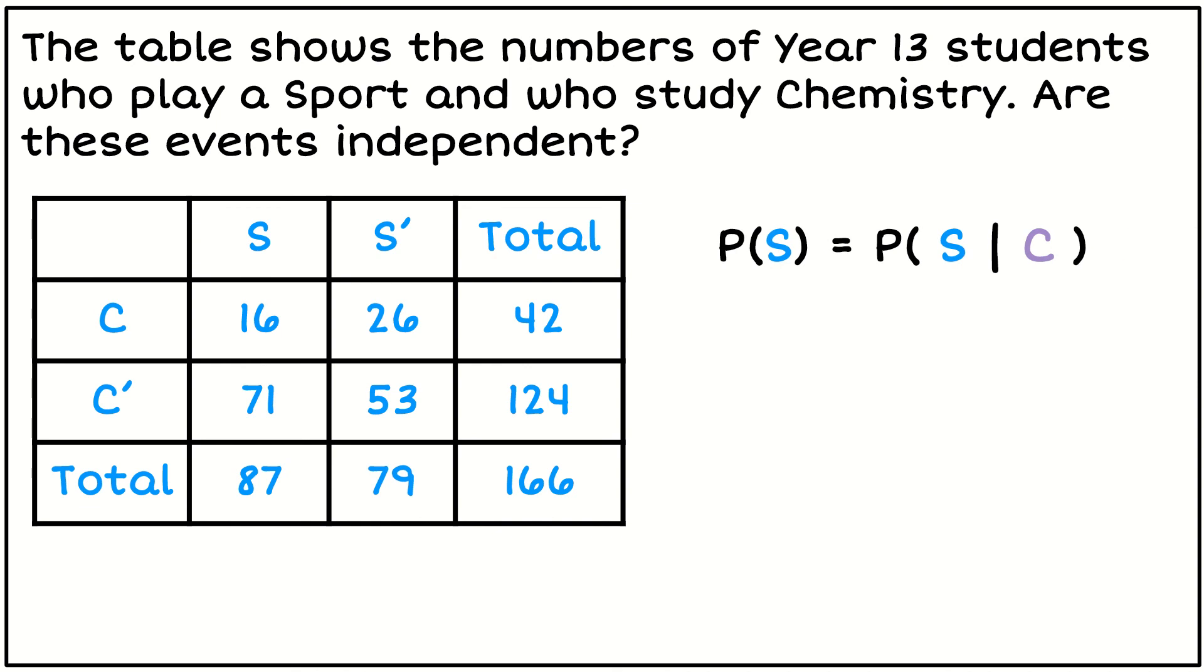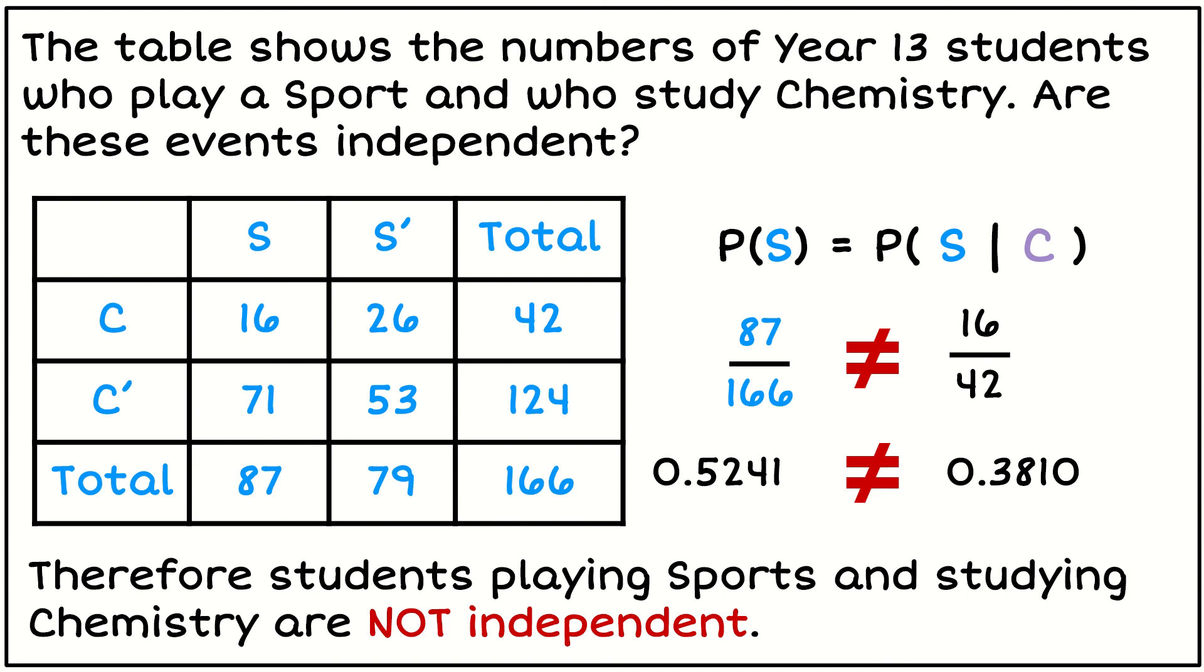I could however use the second rule. So our other rule is about conditional probability. So is the probability of sports affected by knowing whether or not somebody takes chemistry? So if the probability of sports is equal to the chance of sports given chemistry, then they're independent. So let's find the probability of taking sports. Well there are 87 out of 166. Now let's find the probability of taking sports given that somebody takes chemistry. So we know we've got 16 students out of the 42 students who take sports and chemistry from those that are doing chemistry. So let's convert those to decimals and we find that those values are not the same. Therefore again it confirms that studying sports and chemistry are not independent.